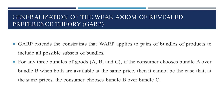For any three bundles of goods, say A, B, and C, if the consumer chooses bundle A over bundle B when both are available at the same prices in the market, then it cannot be the case that at the same prices the consumer will choose bundle B over bundle C.